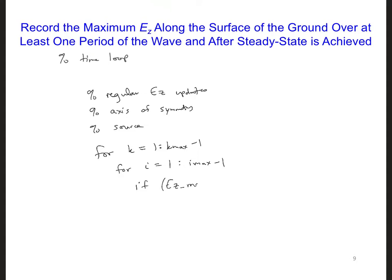If EZmax at i comma k, so these are initialized to zero, if EZmax is less than the absolute value of EZ at i, k, this means that once an EZ has a higher value than EZmax, then we are going to set EZmax at i, k, equal to the absolute value of EZ at i, k. And so every time EZ gets a higher value, we'll put that higher value into EZmax until we don't get any more higher values.